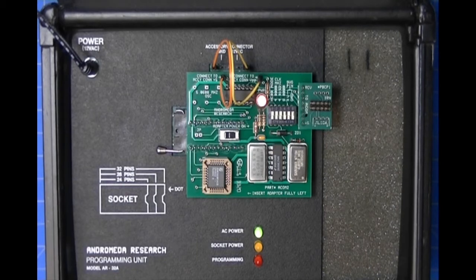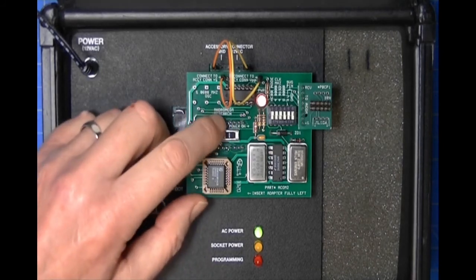Basically, this prevents you from hooking up to the module hot. If you're attaching probes to the module, you don't want those probes to have active voltages on them while you're hooking them up. So you hook up the probes first, and then you turn on the ACOM 2. So we're going to turn off the ACOM 2.